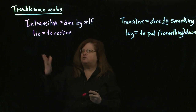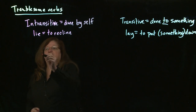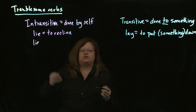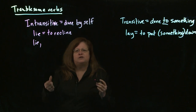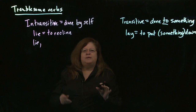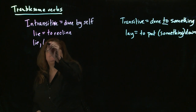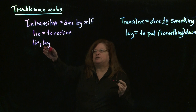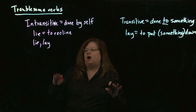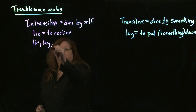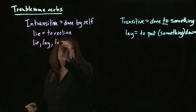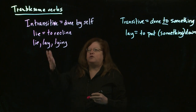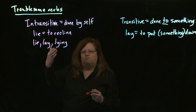In the tenses for lie: the present tense is 'lie' — every day I lie on the beach. Now, this is where it gets tricky. The past tense of lie is 'lay' — yesterday I lay on the beach. That means I was on the beach on my back on a towel or whatever. The present participle is 'lying' — I enjoy lying on the beach, which once again just means being horizontal.